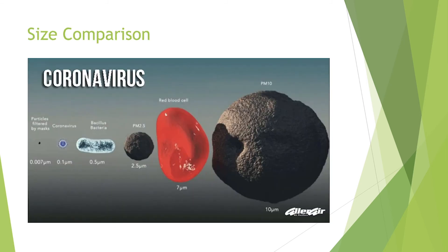To give a visual of how small a virus is: the coronavirus is 0.1 micrometers, which is smaller than a bacterium, which is smaller than particulate matter of 2.5 micrometers, a red blood cell, and particulate matter of 10 micrometers. This is the size that will get stuck in your nose. The coronavirus will be carried in a droplet of a given size, and that determines how it gets deposited.